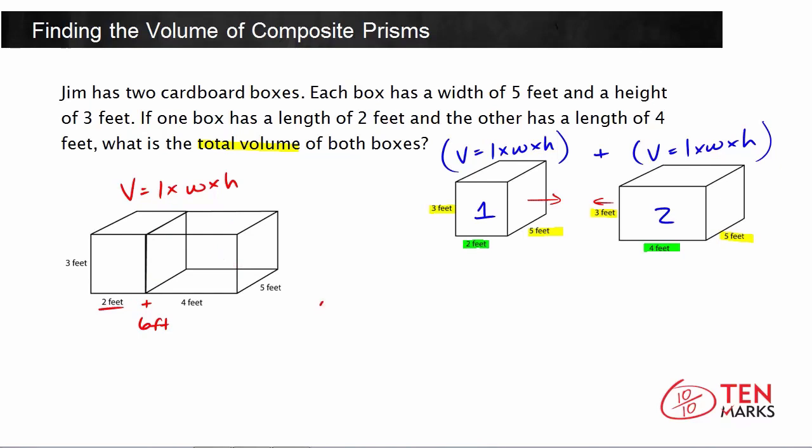So the length is 6, the width is 5, and the height is 3. 6 times 5 is 30, and 30 times 3 equals 90. This is in feet, so you put your units and cubed since we're talking about volume.